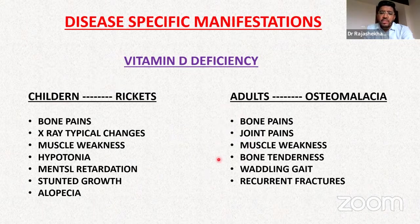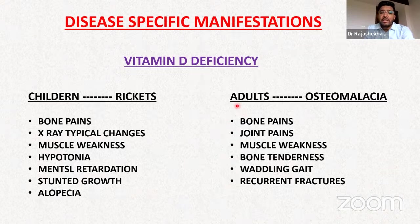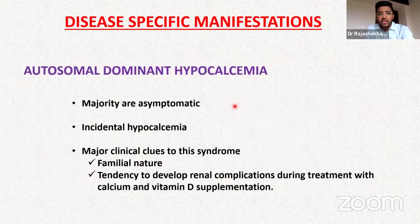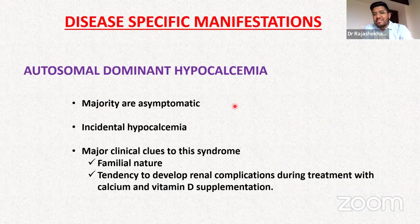Autosomal dominant hypocalcemia due to CASR gain-of-function mutation is usually a long-standing entity, with the majority of affected patients being asymptomatic, though the underlying hypocalcemia is present.